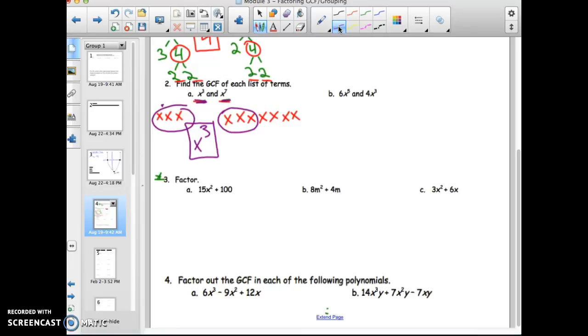Now, if you notice, part B has coefficients six and four and variables, x to the fifth and x to the third. So I need to factor on the GCF between six and four and then the variables after that.